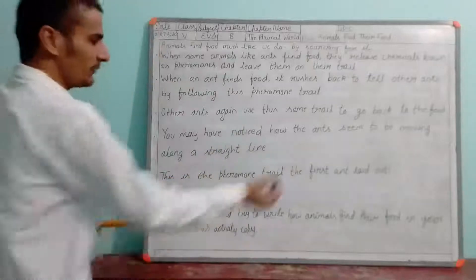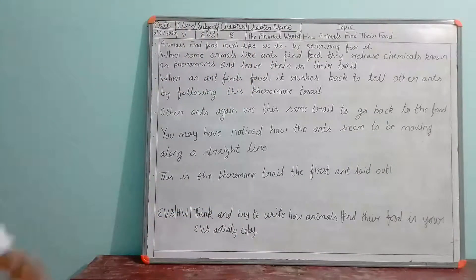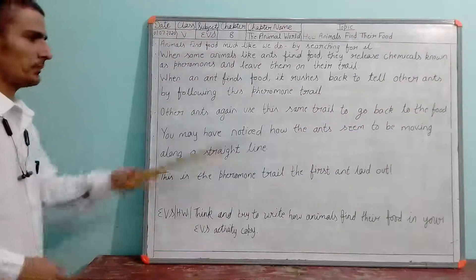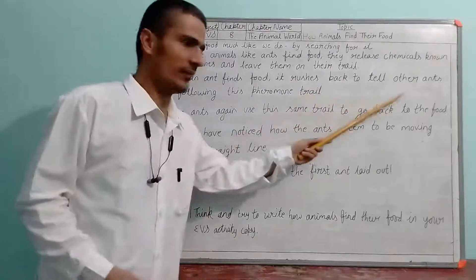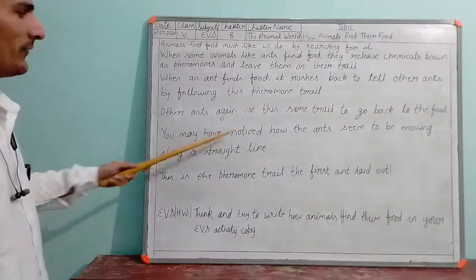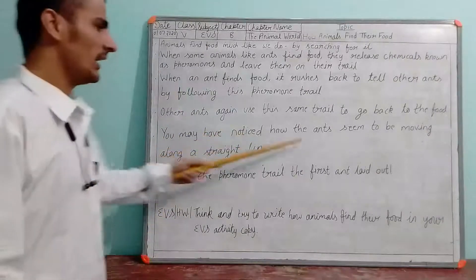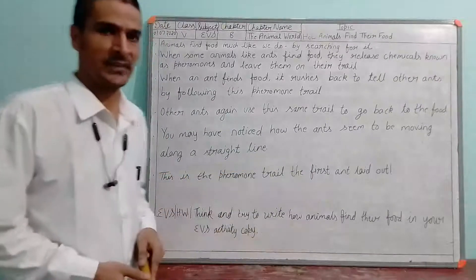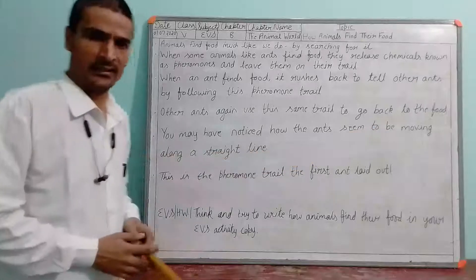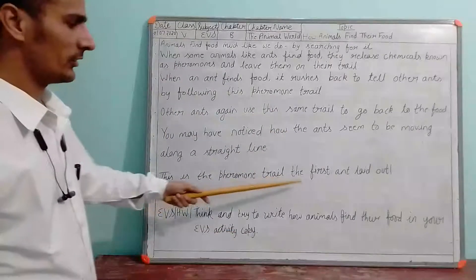When they get the food at a particular place, they move back and leave the chemicals along a single line trail. Other ants use this same trail to go back to the food. The place where they get the food, they leave the pheromones, and other ants follow the same pheromones to get the food. This is the pheromone trail the first ant laid out.